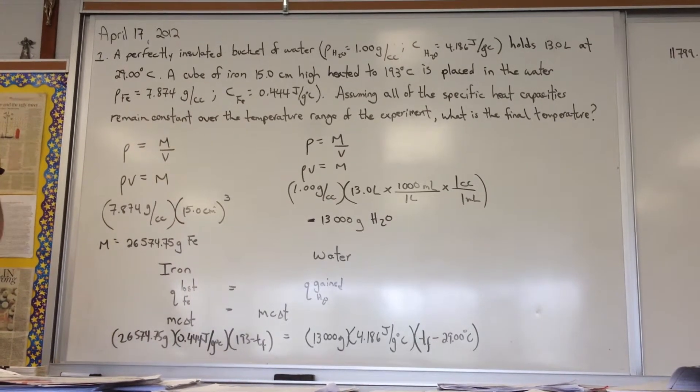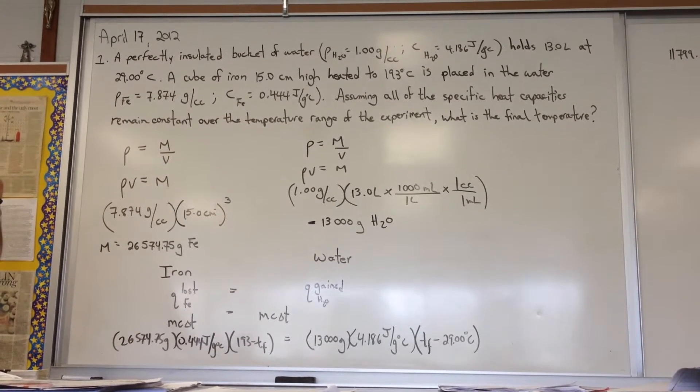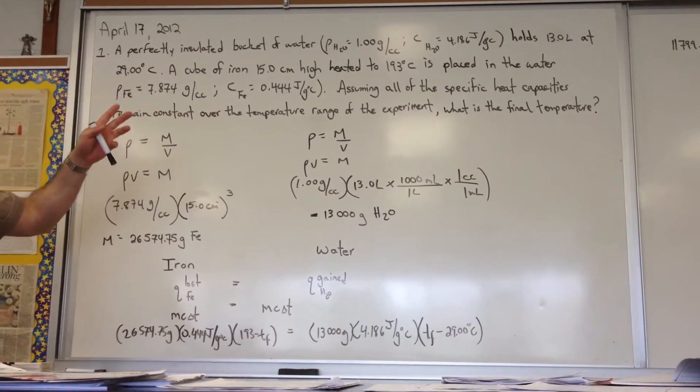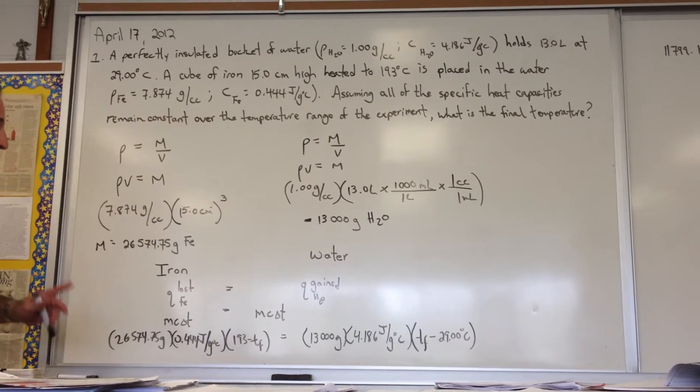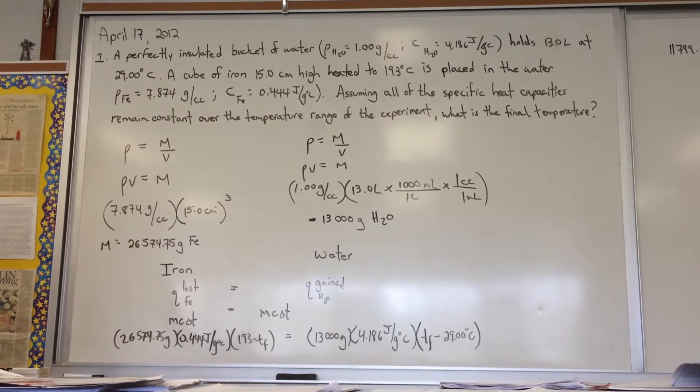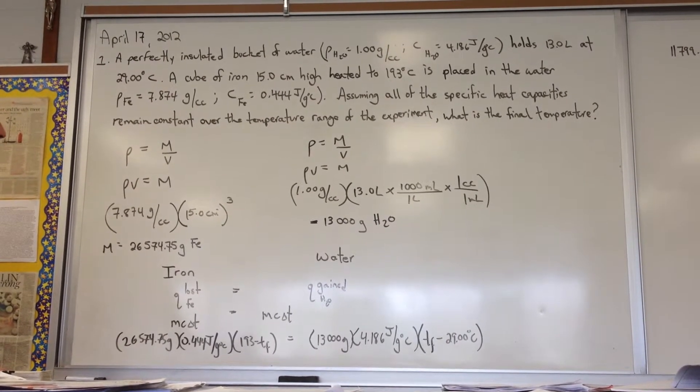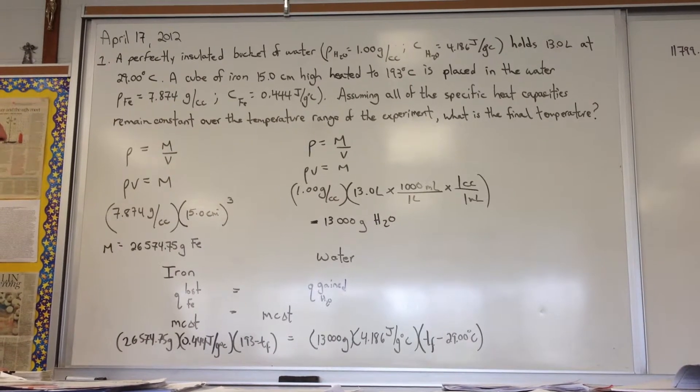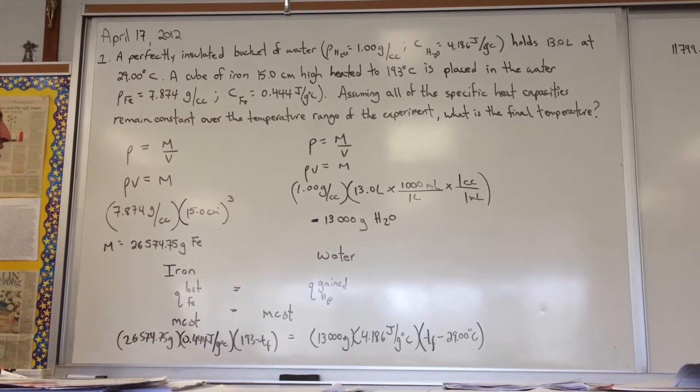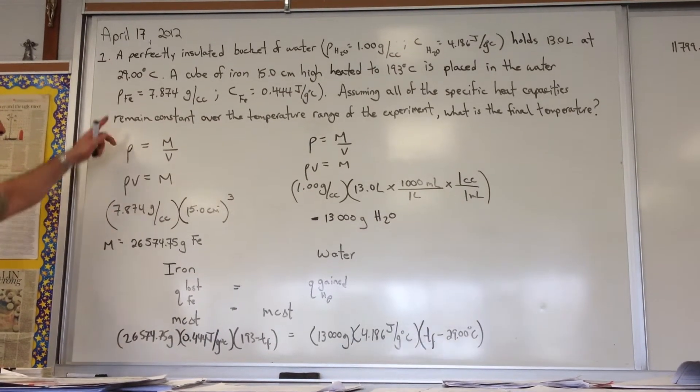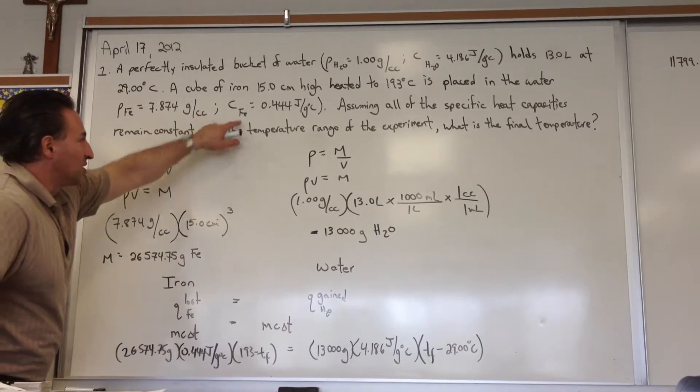This is a calorimetry question, the first one. A perfectly insulated bucket of water, with given density and specific heat capacity, holds 13.0 liters at 29 degrees Celsius. A cube of iron, 15 centimeters high, is heated to 193 degrees Celsius and is placed in the water. I give you the density of iron and the specific heat of iron.